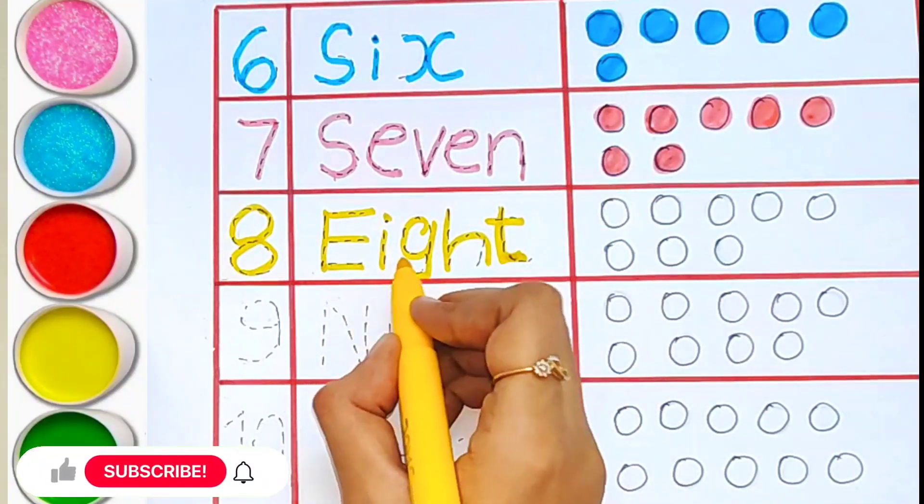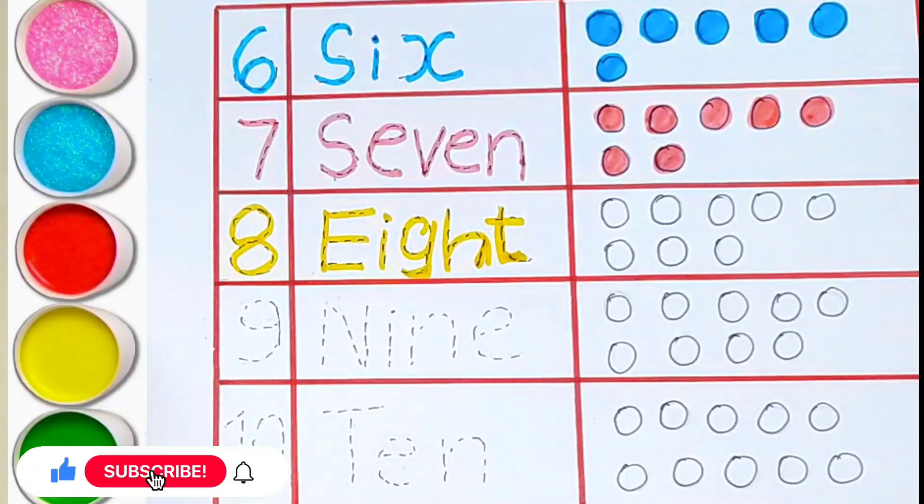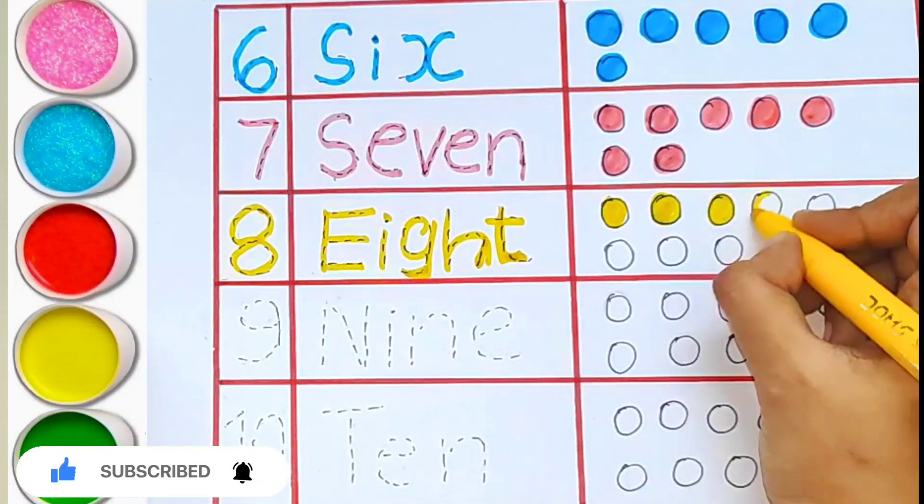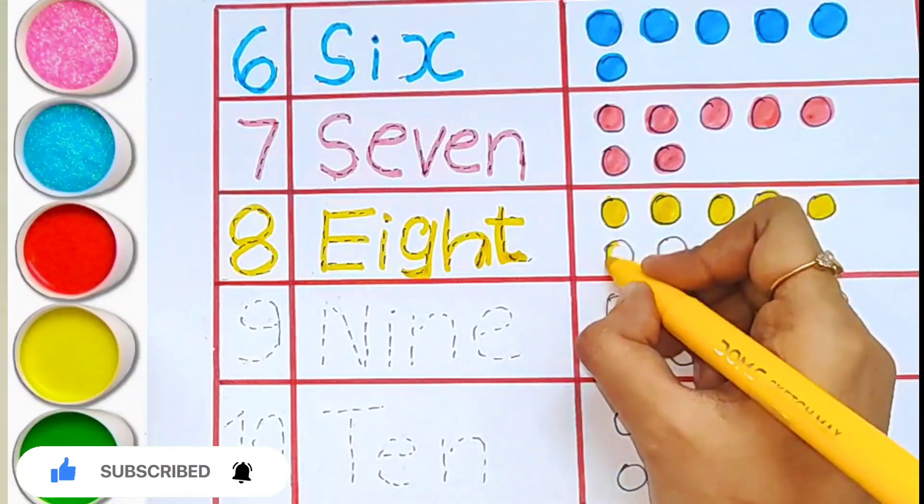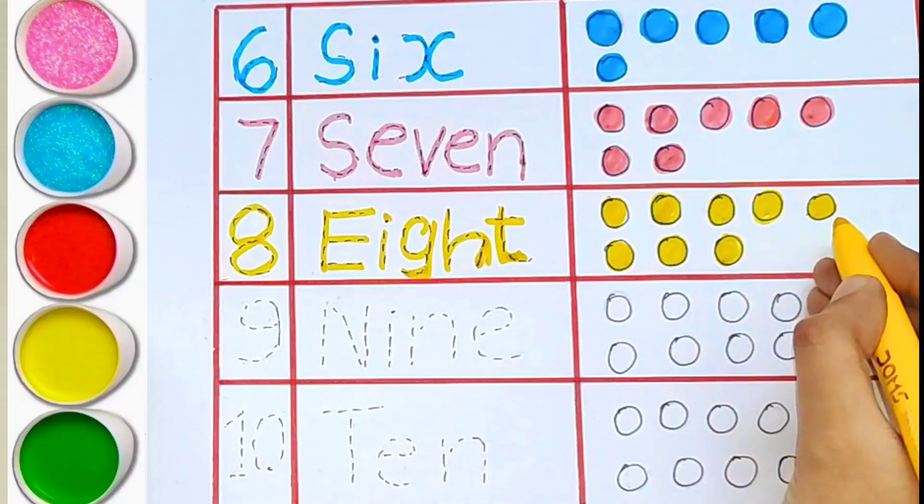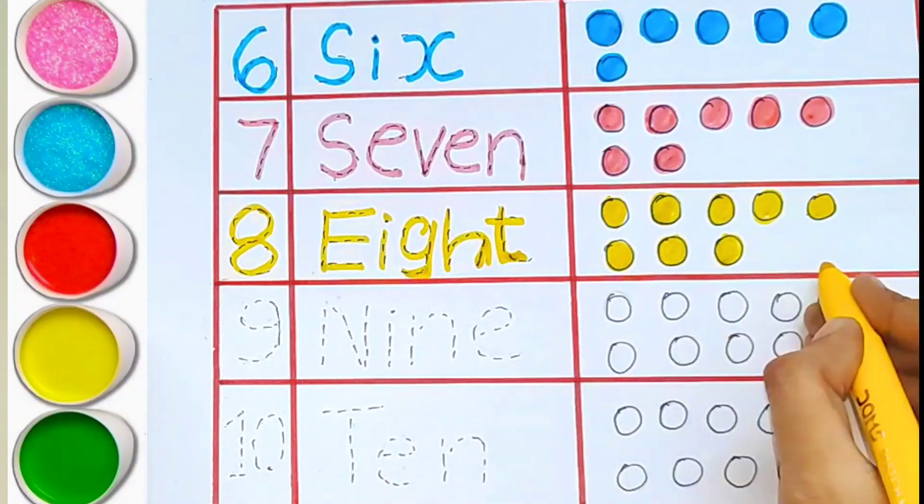E-I-G-H-T. Eight. One, two, three, four, five, six, seven, eight. Eight balls.